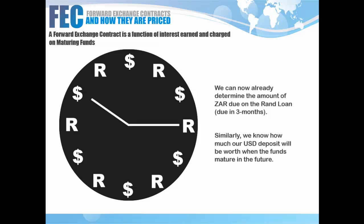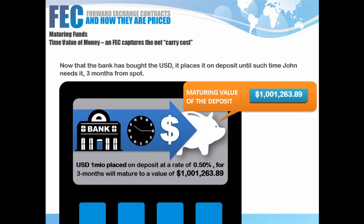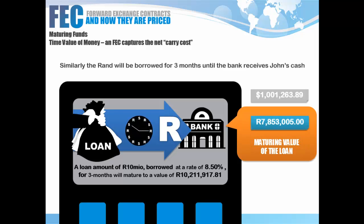A forward exchange contract has become a function of the interest rate earned on the deposit relative to the interest rate charged on the rand loan. We can now determine in three months: how many dollars will I receive when my deposit matures, and how many rands do I have to pay back to my money market desk? We've effectively tied the rand and dollar values together. If I place 1 million dollars on deposit at 0.5% for three months, the maturing value will be 1,001,263.89 dollars.